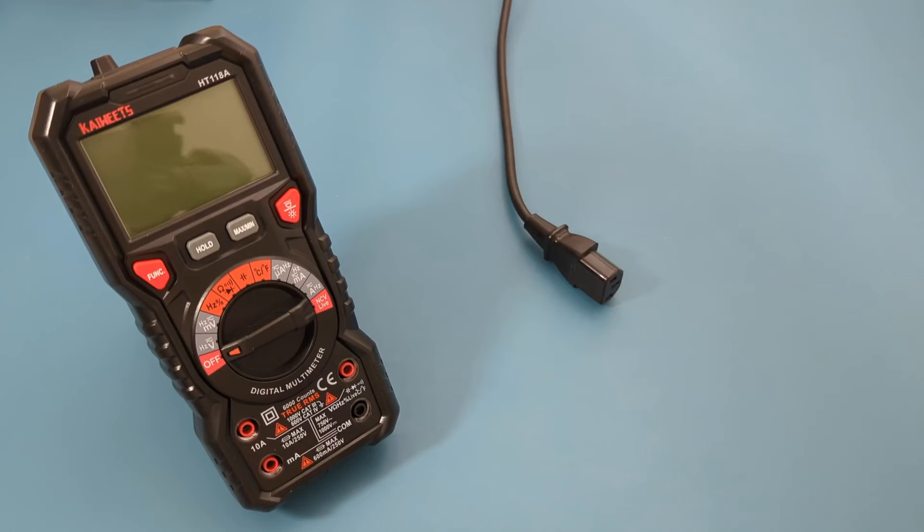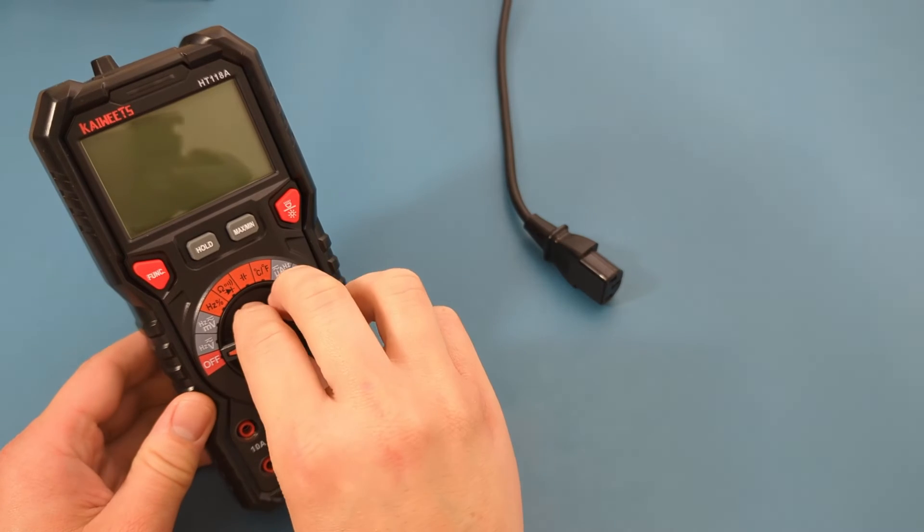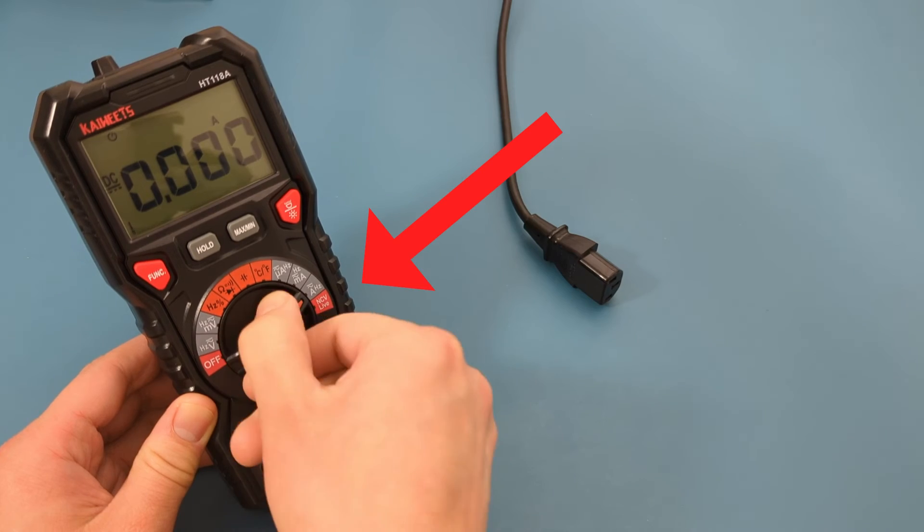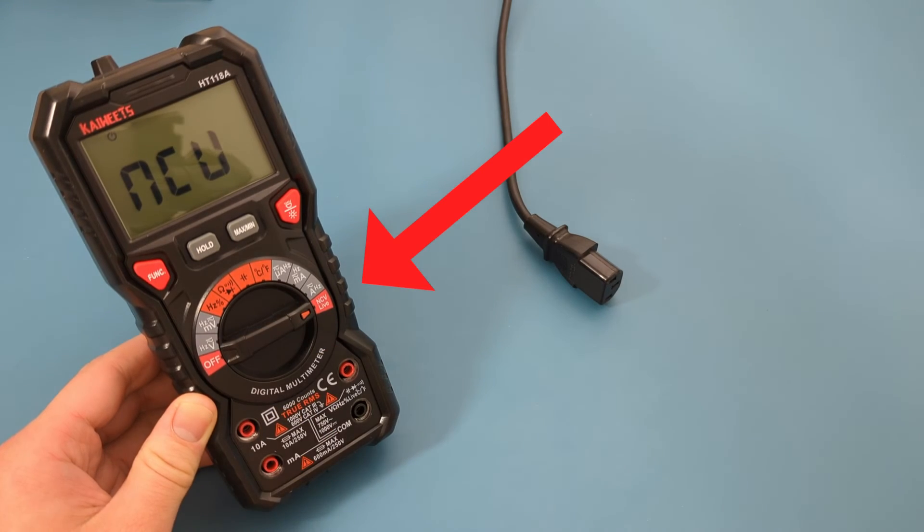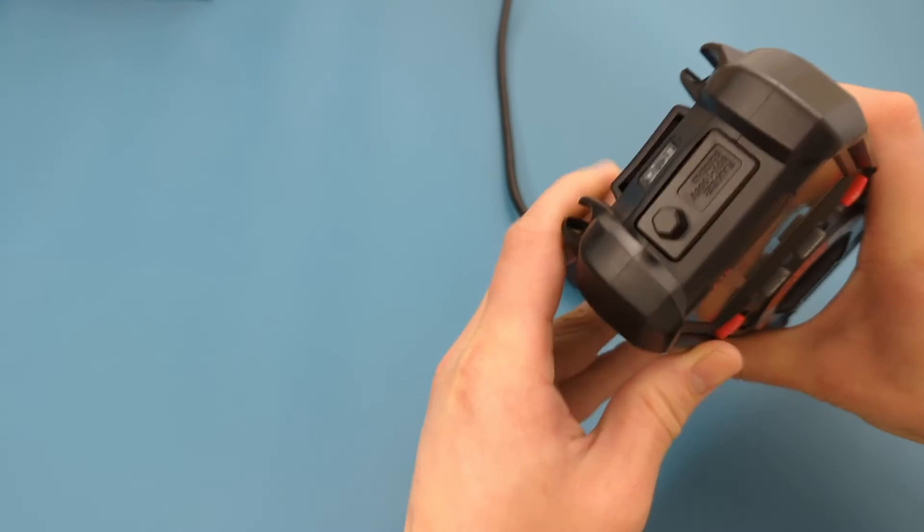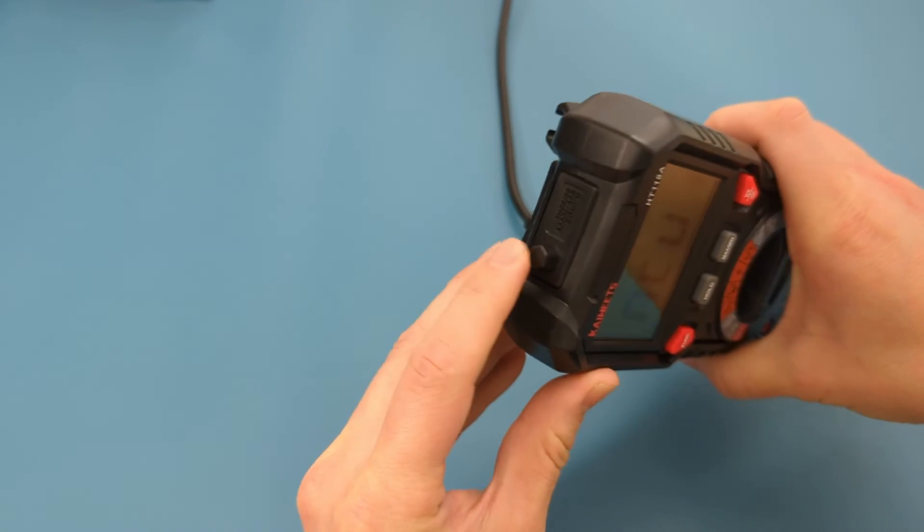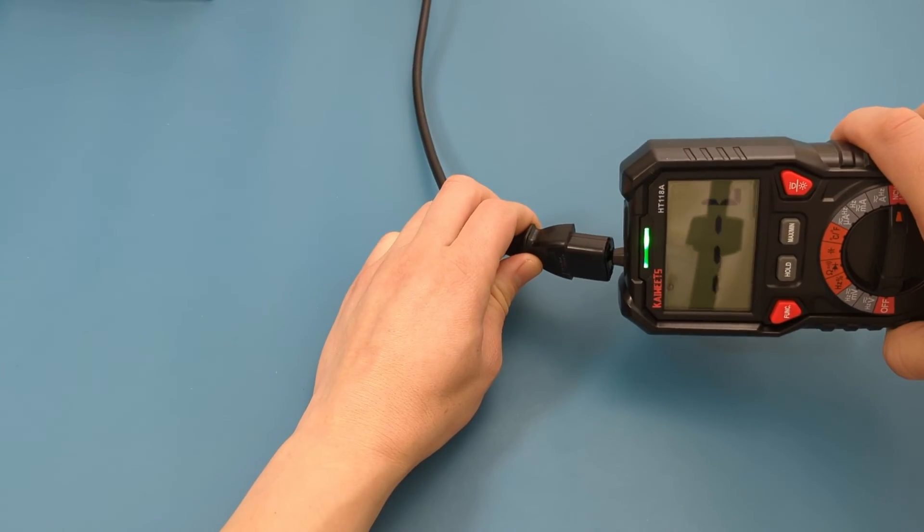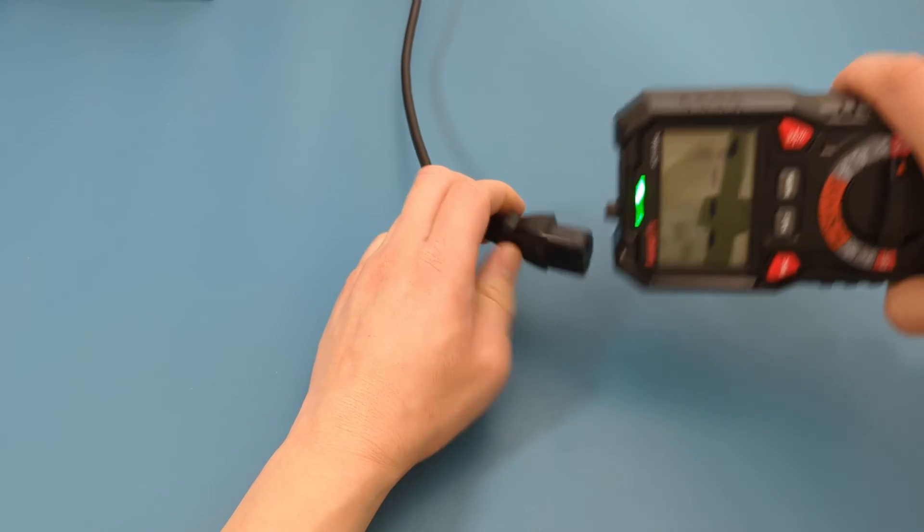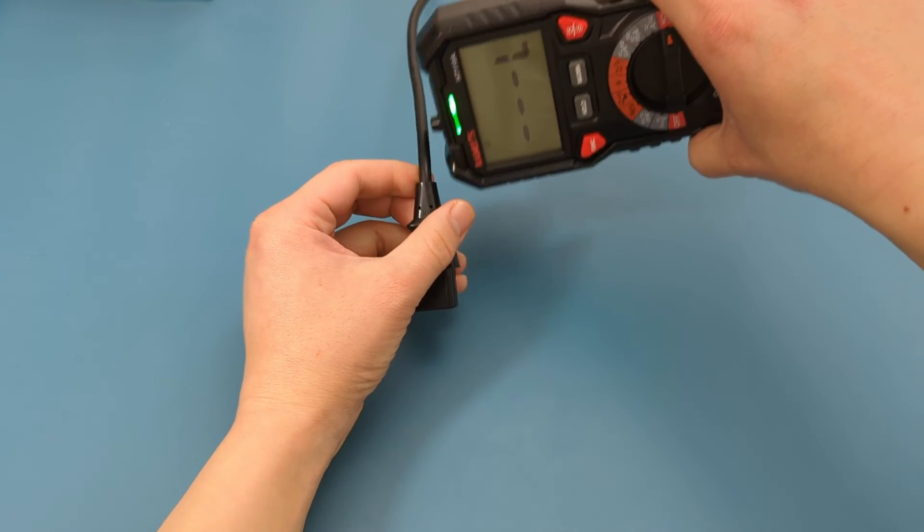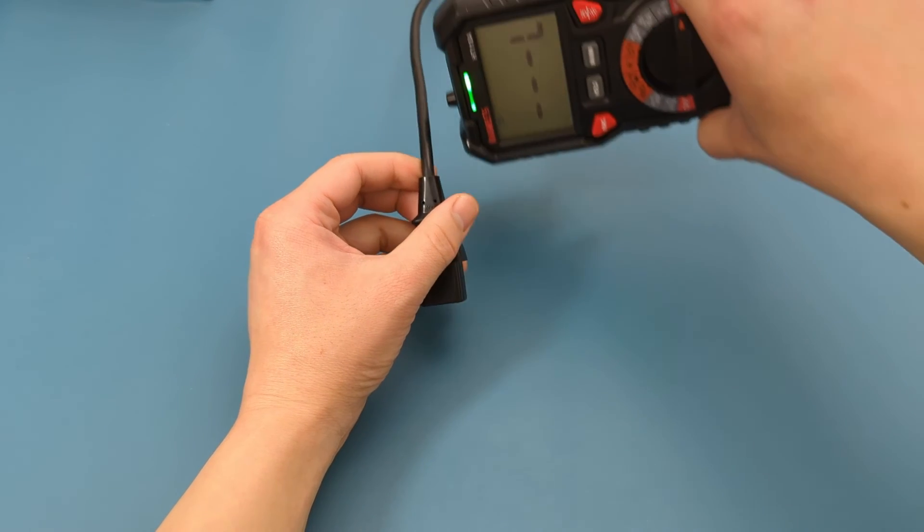This final test is to check the presence of voltage. Turn the dial to the NCV setting. What you want to do is touch the top of the multimeter to the item you want to test. In our case, we're testing a power cord. Since you hear a beep, that means the wire is hot. This is true since the other end is connected to an outlet.